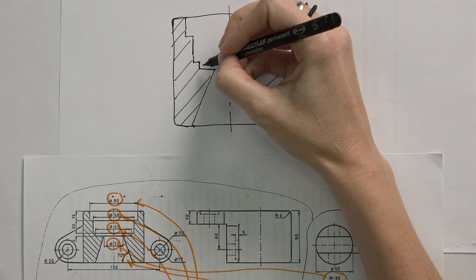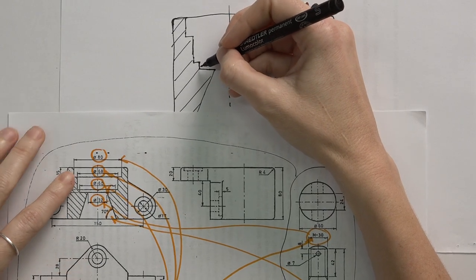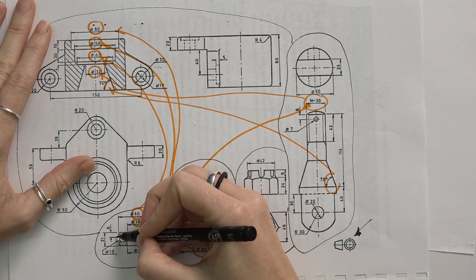So here I have the bearing. How high is this step? This step is four high. How high is this part? It's six.